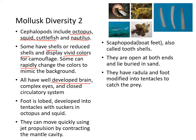Cephalopods have a very well-developed brain, complex eyes, and a closed circulatory system. The foot is modified into tentacles with suckers, like in octopus and squid. These can move rapidly using jet propulsion of water by contracting the mantle cavity. Examples shown include nautilus, cuttlefish, squid, and octopus.